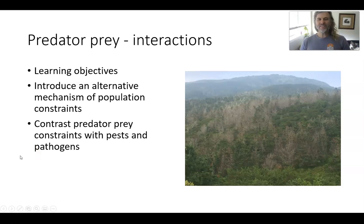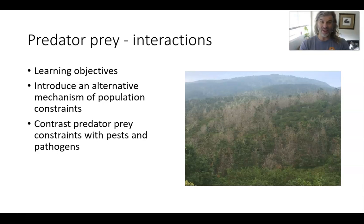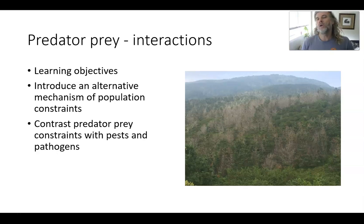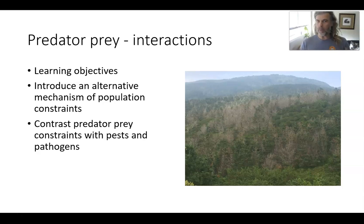Let's step up the complexity of our models by doing two things: simplifying our models but adding a second species. The systems we care about — forest systems — are not single-species systems. Even when we're talking about monospecific stands, there's always something else going on, something else present. So what we're going to do here is learn about predator-prey interactions.